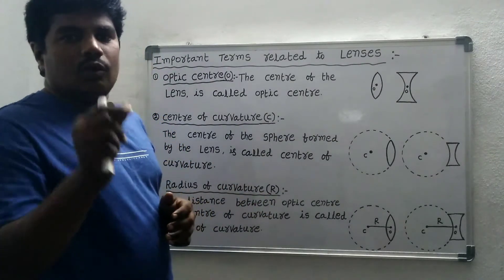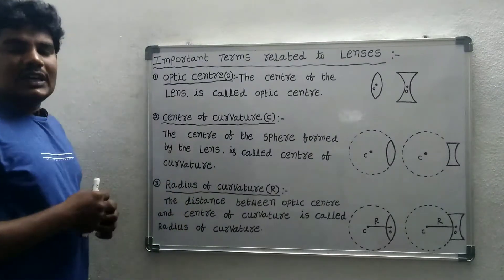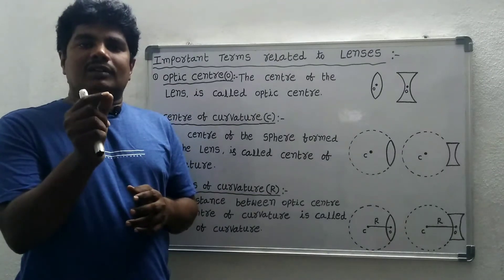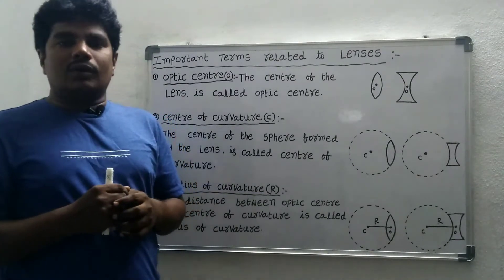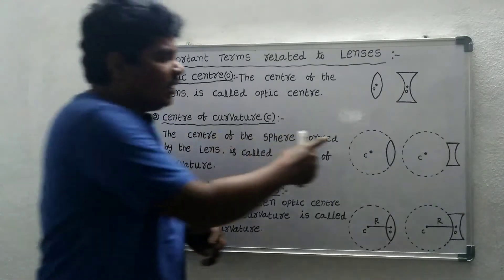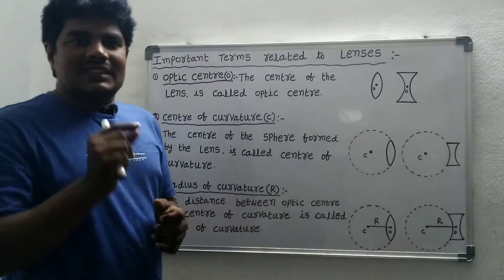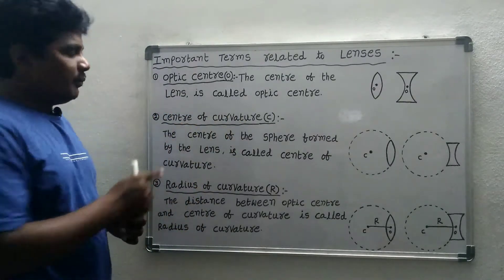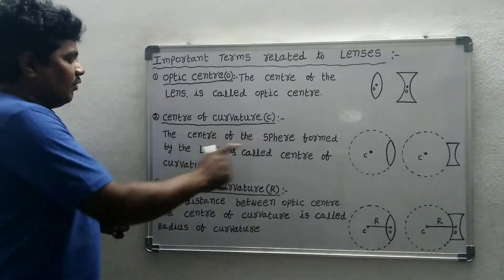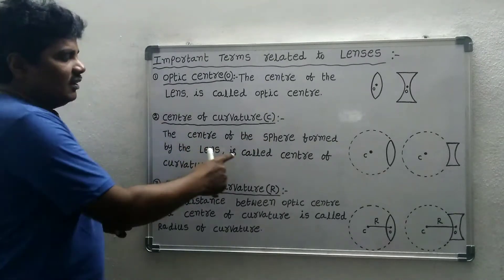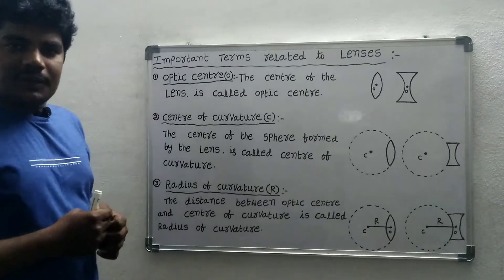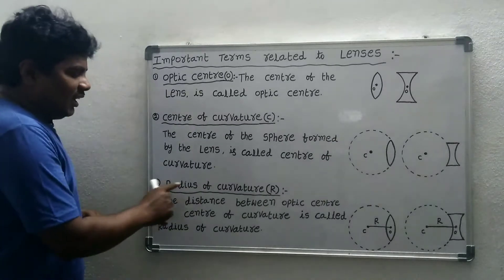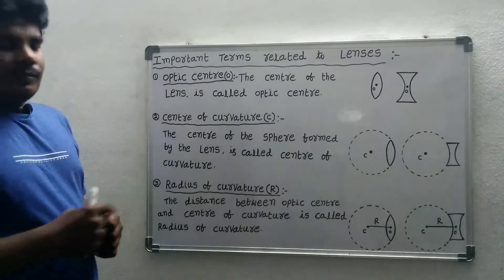Number two: center of curvature. A lens is generally a part of a hollow sphere, so we construct the sphere from the lens. The center of that sphere is called the center of curvature. It is represented by C.